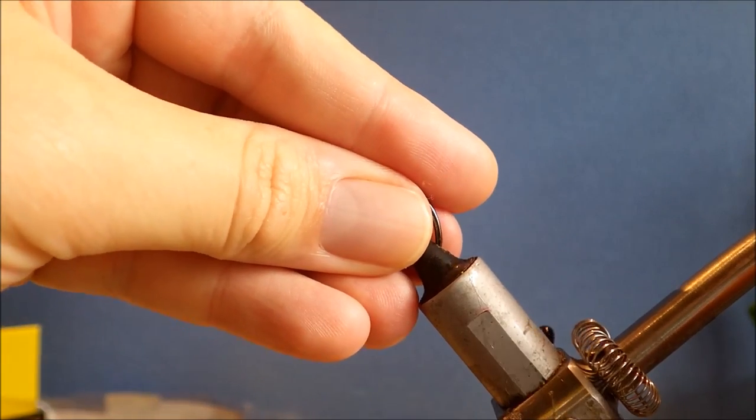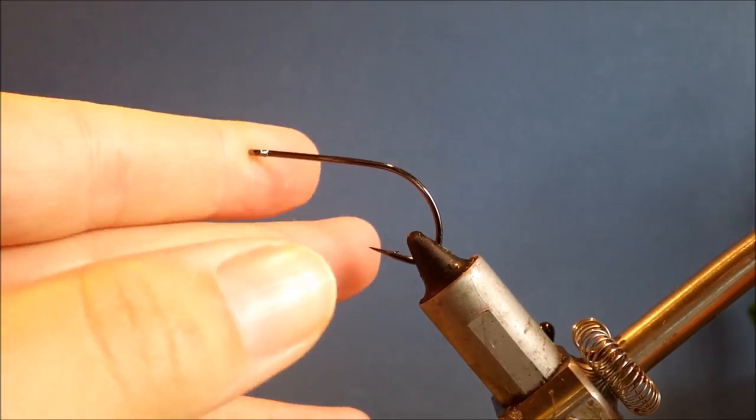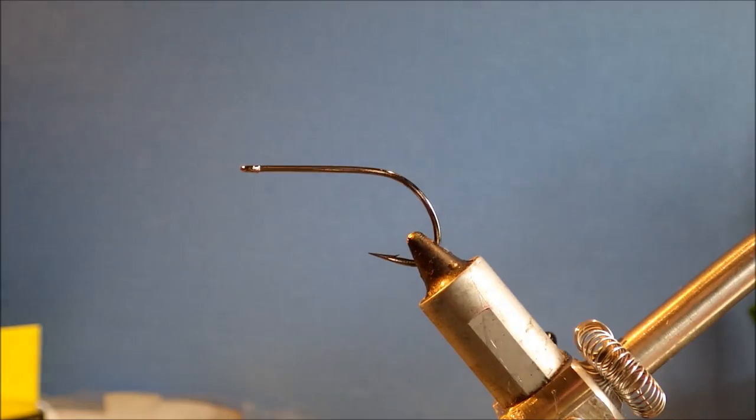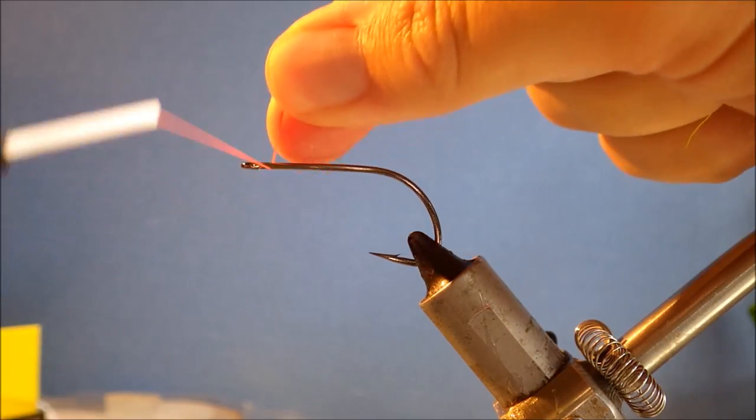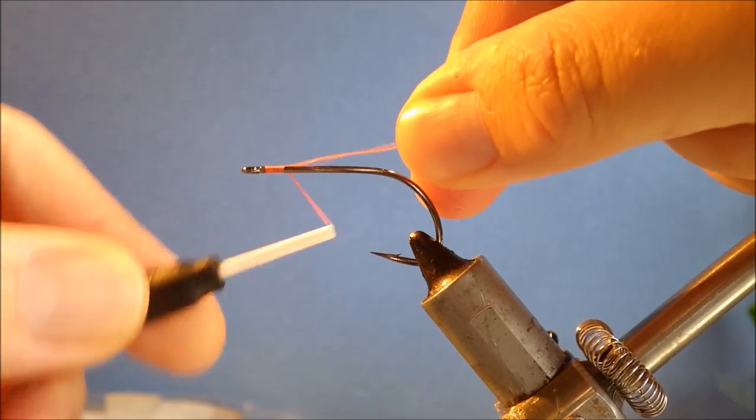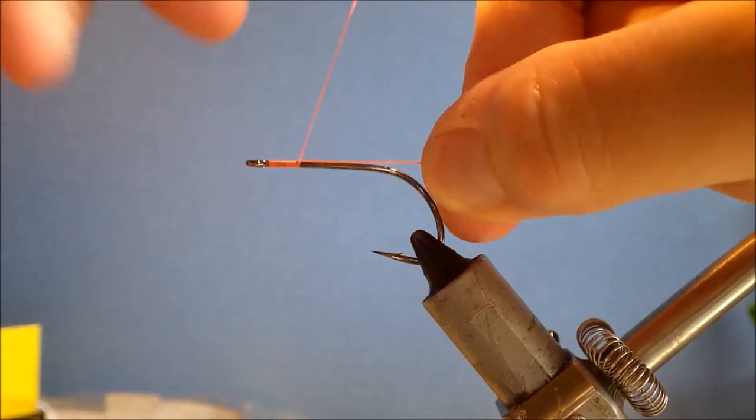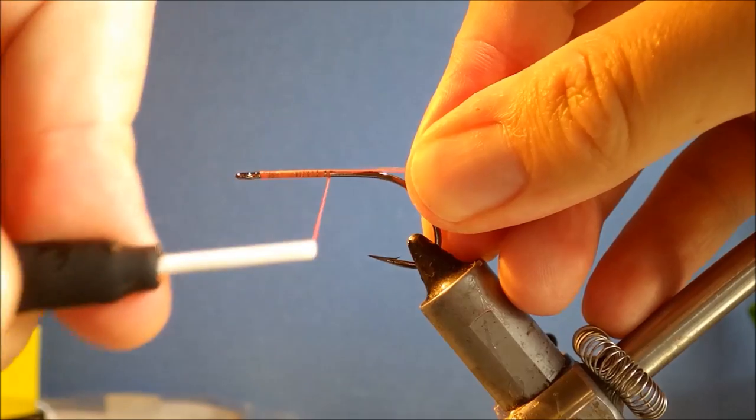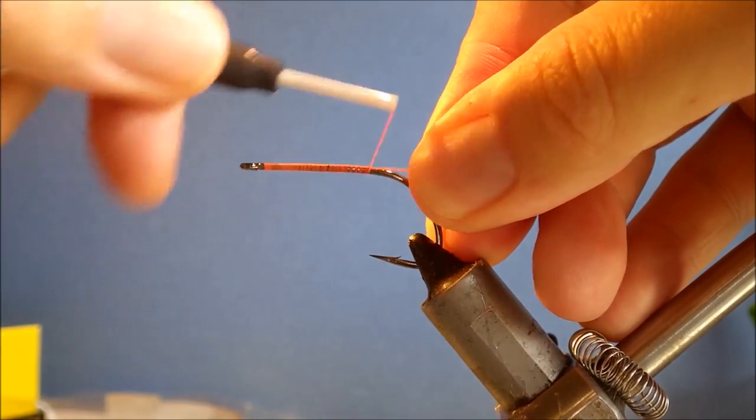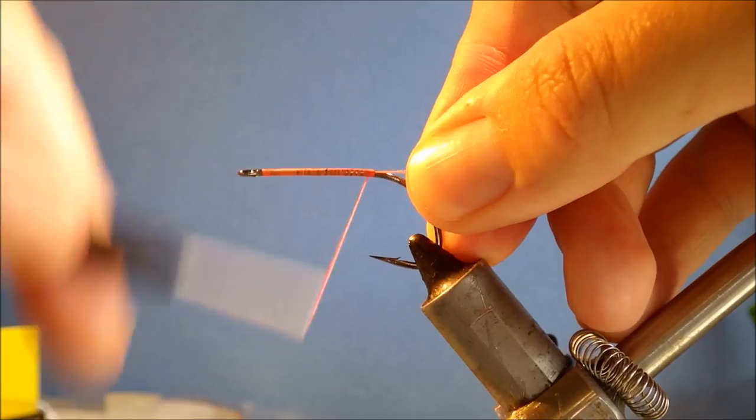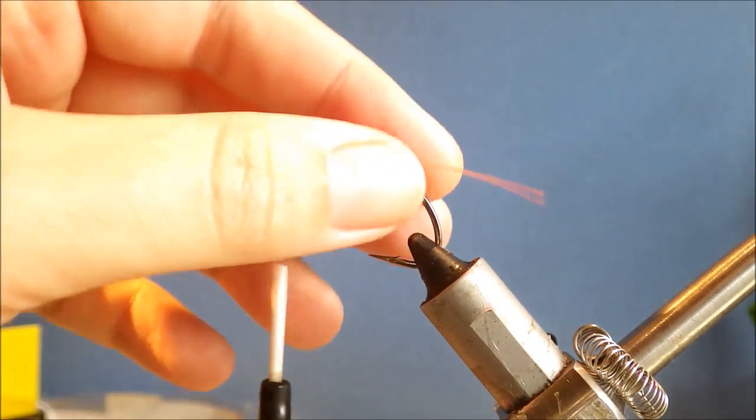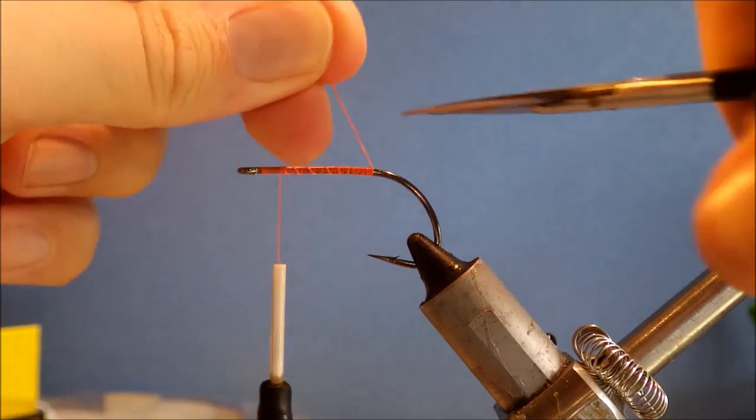So I'm tying this on a size 1 Gamakatsu B10S, but you can use any sort of wide gape stinger hook. I'm going to start my thread, the color doesn't matter at all, this is just hidden inside the body. This is just 3/0 so that I can quickly build up a reasonable base for it to grip.